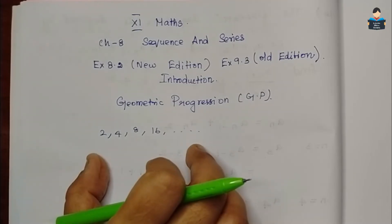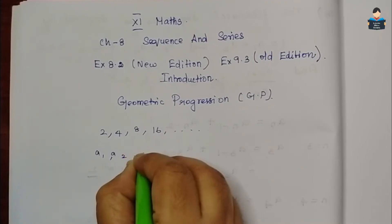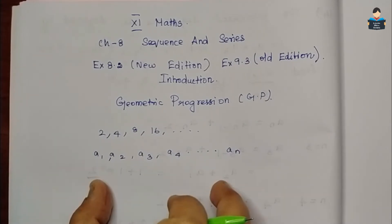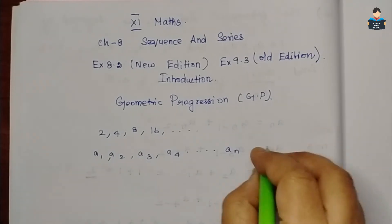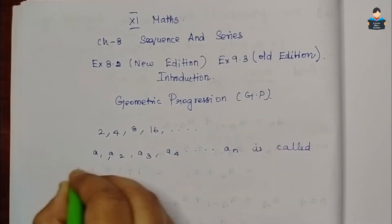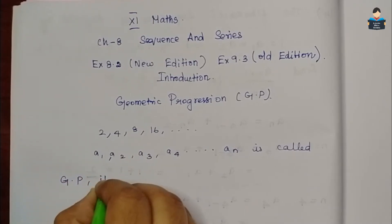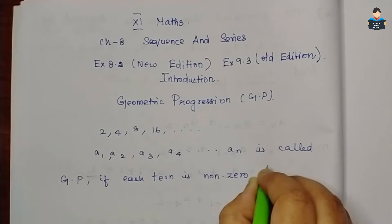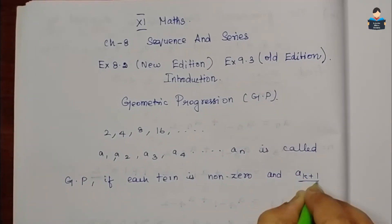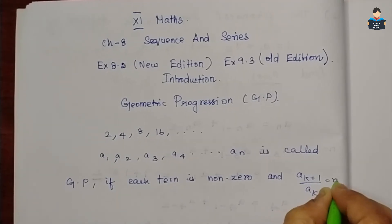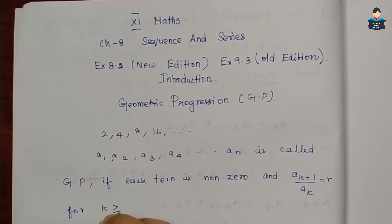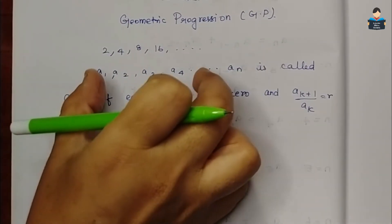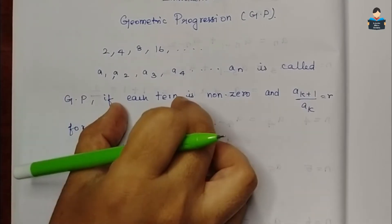This sequence is called a1, a2, a3, a4, up to an. To check the ratio, this sequence is called a geometric progression if each term is non-zero and a(k+1) by a(k) is equal to r, for k values greater than or equal to 1. So if the given sequence is a GP, then a(k+1) by a(k) equals r.